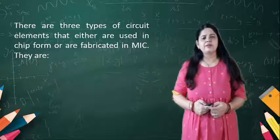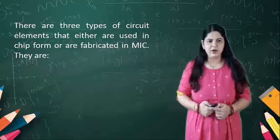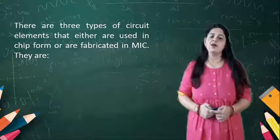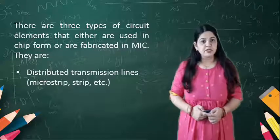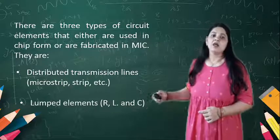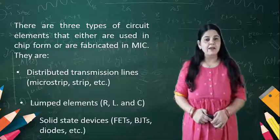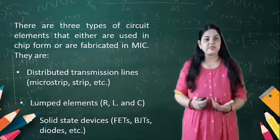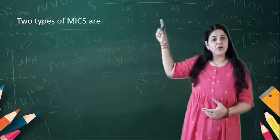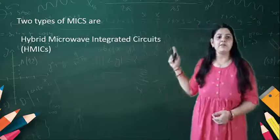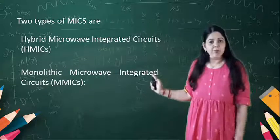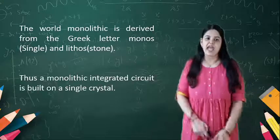Due to that, MMIC use could be commercial now. There are three types of circuit elements that are either used in chip form or fabricated in the MIC: distributed transmission lines such as microstrip and stripline; lumped elements R, L, and C; and solid-state devices such as FETs, BJTs, and diodes. There are two types of MICs: hybrid microwave integrated circuits (HMICs) and monolithic microwave integrated circuits (MMIC).